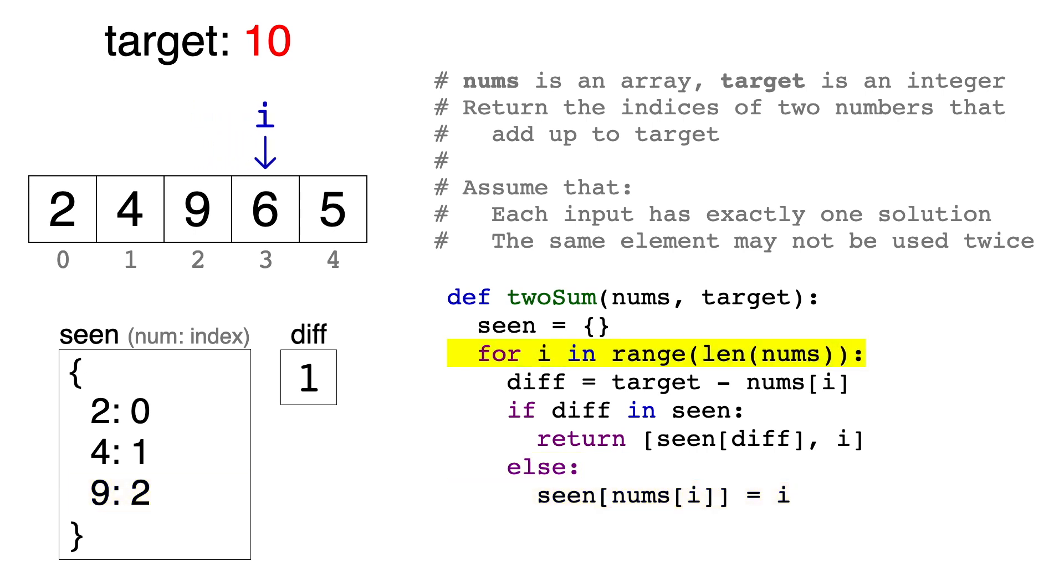Next up is 6, and the difference is 4. Now we have found it in the dictionary, 4 is a key. Now that we've found the pair of numbers, what's left is to return the indices.